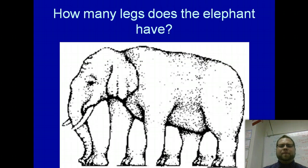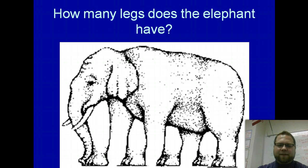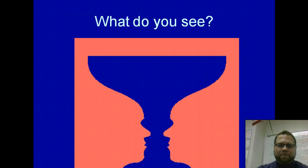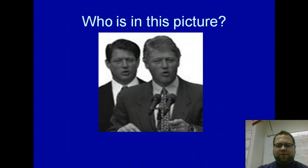Let's look at a couple of weird things — it's kind of like The Ring whenever you see this. How many legs does this elephant have? You might get a nosebleed trying to count. What do you see here? Some people might see a chalice. Some people might see two faces.